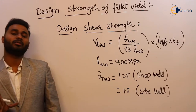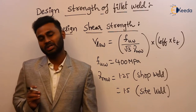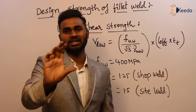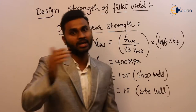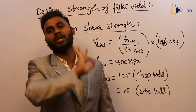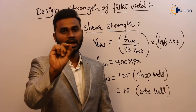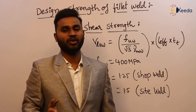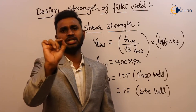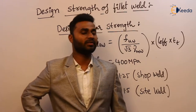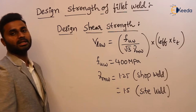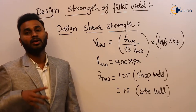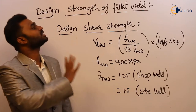In fillet weld design, let me revise the very important topics — there is a high chance of exam questions on these. First, size of the fillet weld: minimum size and maximum size provisions. Then, throat thickness — a very important dimension — where t_d equals k times s, and k depends on the angle between the fusion faces. Usually take k as 0.7, so t_d equals 0.7s. Then effective length, and finally shear strength — the design strength. Solving numericals will give much greater clarity.